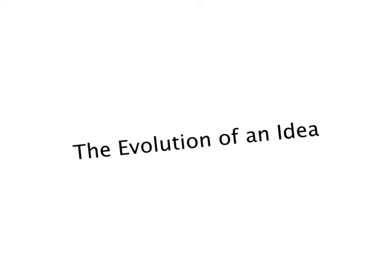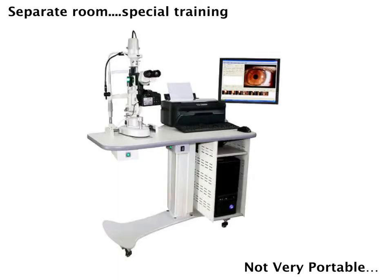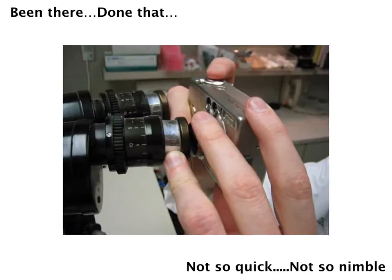Let's talk about the evolution of an idea, or why smart device ophthalmic photography was developed. When you think of slit lamp photography, you think of a dedicated device and dedicated room that requires specially trained technicians. One of the biggest problems with this is it's not very portable or efficient. You have to move the patients around a lot, and it takes a while for the pictures to upload onto the server to be able to view them in the exam room. To solve some of these issues, we started off by trying to hold up a DSLR camera in front of the eyepiece.